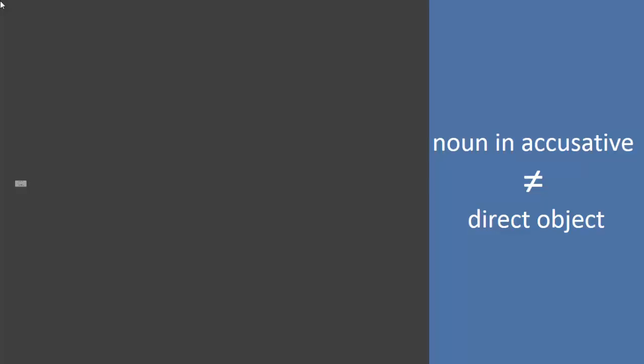When you're reading or listening to German, it can be useful to identify objects of preposition and prepositional phrases because it keeps you from mistaking them for direct or indirect objects. For example, some students mistakenly assume that any noun in the accusative must be the direct object.